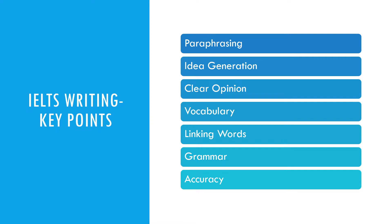First, let's talk about paraphrasing. There is no need to use a synonym for each word in the question. There are a variety of simple ways to achieve this — by understanding the context and restating it in your own words, by changing the order of the words, or by just changing the form of the word.